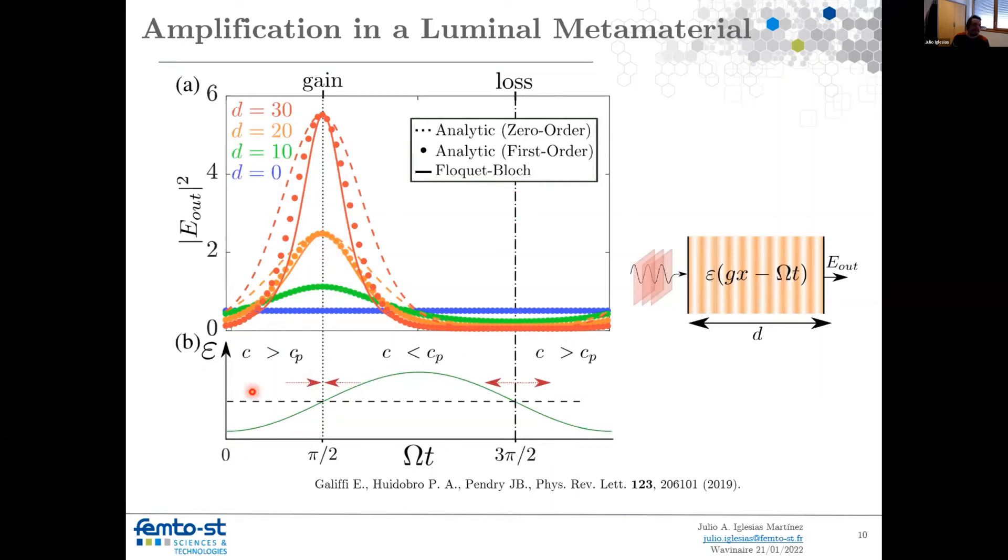where we show the modulation of the permittivity with respect to time. At two points, where it's exactly when the modulation speed is equal to the speed in the media. Let's remember that since we are modulating the dielectric properties, we are also modulating the speed of light. So when these ones are equal, two main phenomena happen.